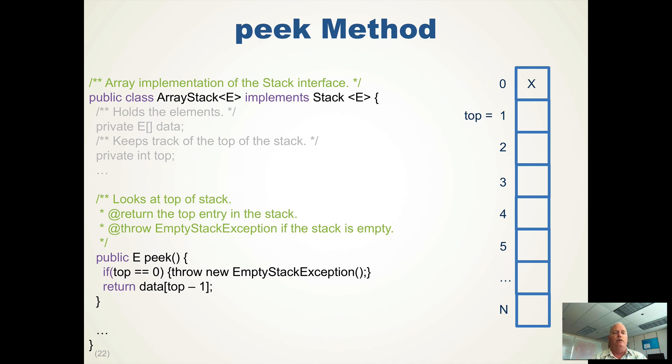The peak method checks to see if it's empty, and we're just checking if top is zero. We could call if empty. Then we throw a new empty stack exception. Else after we do that, we will return the data at top minus one, because top is the first empty spot. So if top is one, we'll return data zero. Notice we don't affect top, so that the peak did not change the stack.